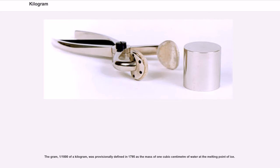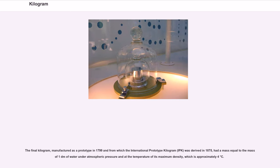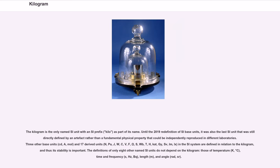The gram, one one-thousandth of a kilogram, was provisionally defined in 1795 as the mass of one cubic centimeter of water at the melting point of ice. The final kilogram, manufactured as a prototype in 1799 and from which the International Prototype Kilogram (IPK) was derived in 1875, had a mass equal to the mass of one decimeter of water under atmospheric pressure at approximately 4 degrees Celsius. The kilogram is the only named SI unit with an SI prefix, kilo, as part of its name.